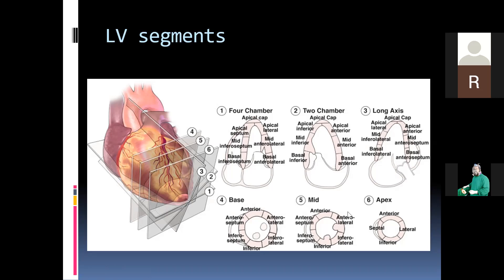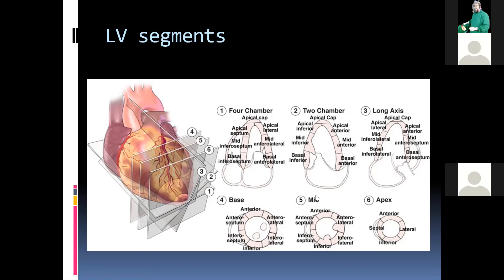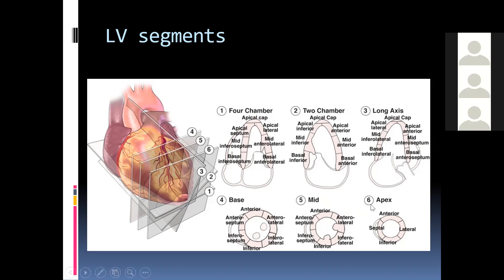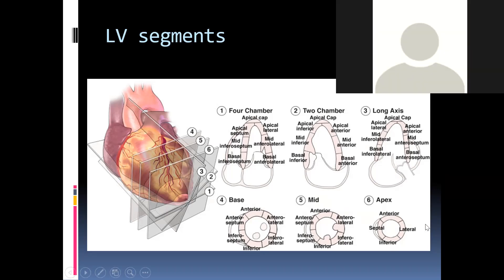The LV is divided into segments. At the base and mid-cavity there are anterior, inferior, septal, and lateral segments. At the apex there are anterior, inferior, septal, and lateral segments plus an apical cap. The apical cap movement is not visible on echocardiography but can be seen on MRI perfusion imaging. Including the apical cap gives 17 segments; otherwise there are 16 segments.